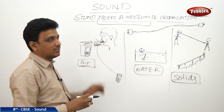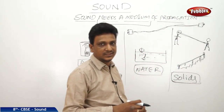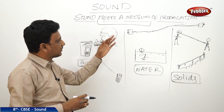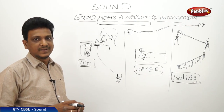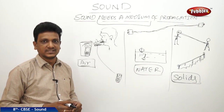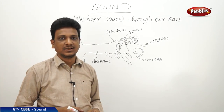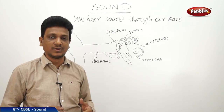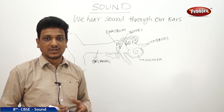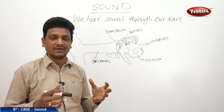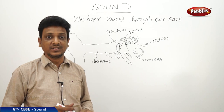So, from all these activities and situations, we can conclude: sound propagates through air, sound propagates through water, and sound propagates through solids. The media for the propagation of sound are air, water, and solids. Now let us see how we hear sound through our ears.